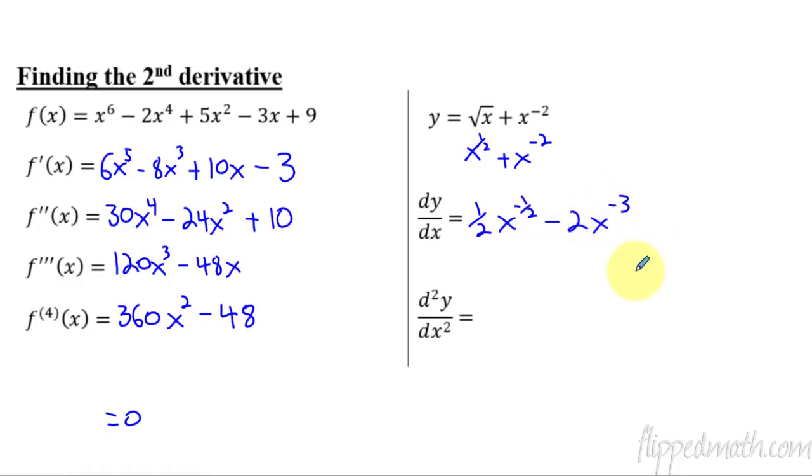And we could simplify that, but we wouldn't want to rewrite this because we're trying to take its second derivative. So now we use the power rule again. So we get negative one-fourth x to the negative three-halves. And then here, the negative three times negative two is plus six x to the negative four. And then we could rewrite that one if we wanted, but that would be the second derivative.